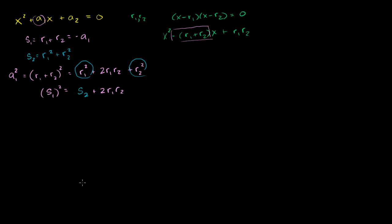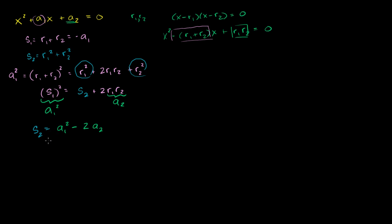Can we figure out what r1 times r2 is from the original polynomial? Looking at the expansion, r1r2 is represented by a2. So r1r2 equals a2. This whole expression on the left is a1 squared, so if we solve for S2, we get S2 equals a1 squared minus 2 times a2.